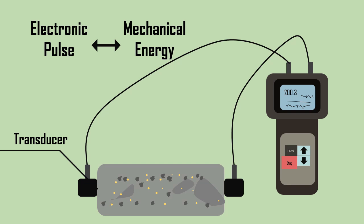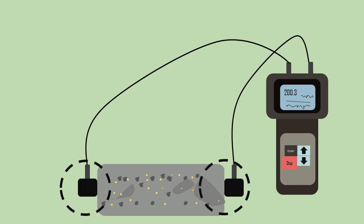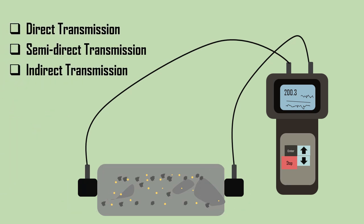For the test procedure, a transducer is placed at one end of the concrete and the other is placed at the other end. The transducer arrangement can be of any of the following types: direct transmission, semi-direct transmission, and indirect transmission.